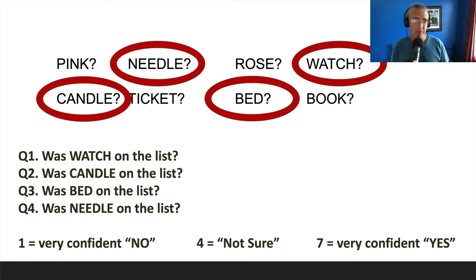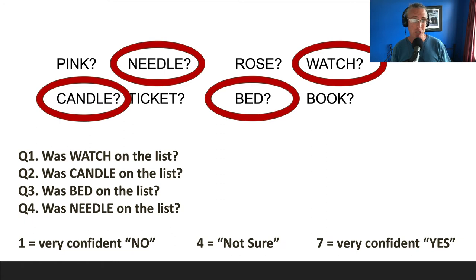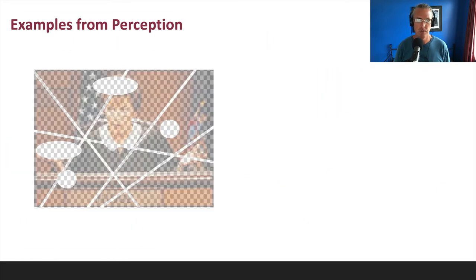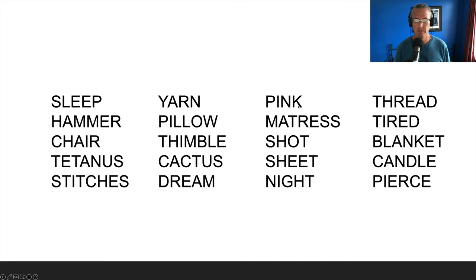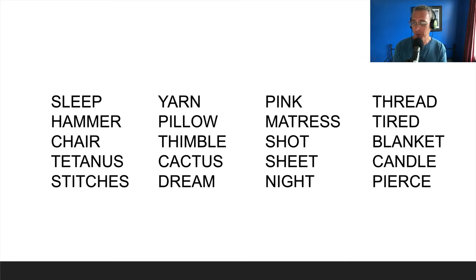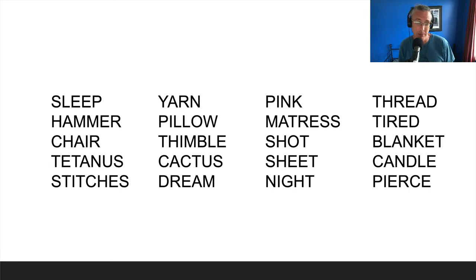With these kinds of words, about 40% of people experience what we call a false memory — they think it was on the list and they're very confident it was. When I do this demo with judges from the National Judicial Institute, that number holds up: about 40% experience this false memory. And it freaks them out. 'What do you mean it wasn't on the list? I'm sure it was on the list.' Let's go all the way back to the list. Watch — no. Candle — yes. Bed or needle — no. It's just not there. How can you consciously remember something that never occurred? We call this a false memory, and there's this whole notion of false memory syndrome. We now know how to create false memories — that's what we just did to you.